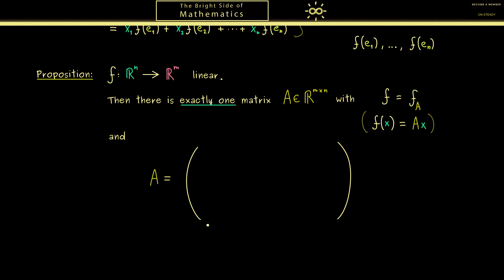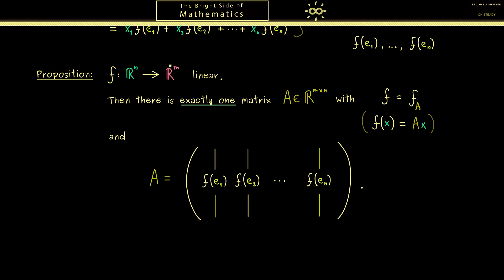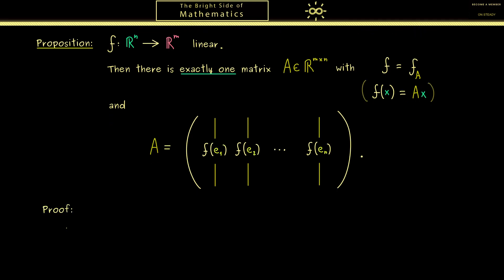It's not hard to describe how matrix A should look: in the columns of A we find the images of the canonical unit vectors. The first column is f(e₁), the second column is f(e₂), and so on until the last column f(eₙ). With this we have the whole proposition, which tells us how an abstract linear map can be translated into a table of numbers — the converse of the statement explained in the last video.